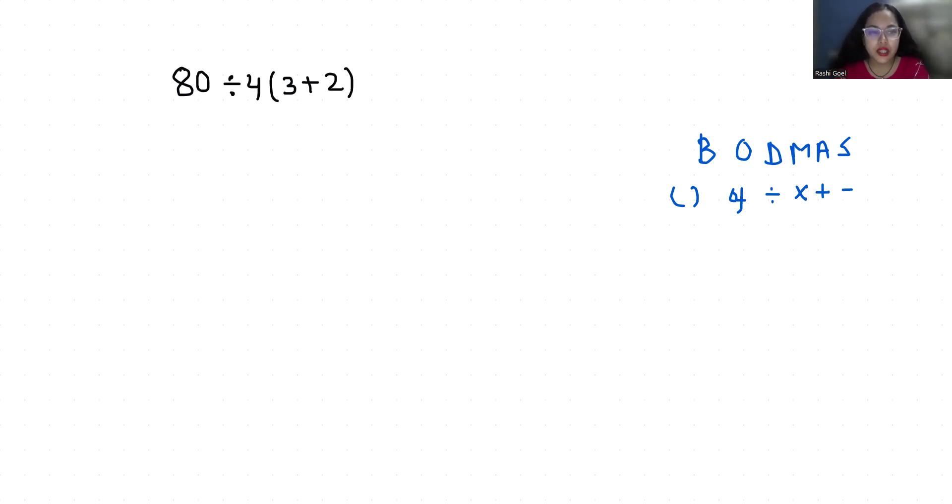First is bracket, so we will solve the bracket. In the bracket there is 3 plus 2, so what is 3 plus 2? 5. We will remove the bracket and now we have 80 divided by 4 times 5.